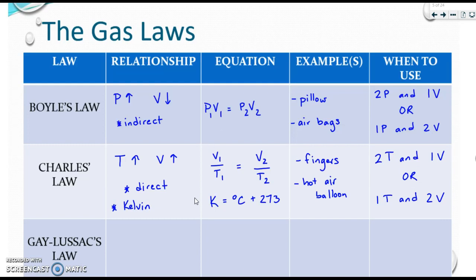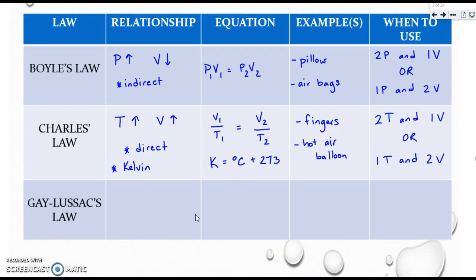The next law is the Gay-Lussac law. It is a pressure temperature relationship. As temperature goes up, pressure goes up, and vice versa. So this is again a direct relationship. And again, we're going to need the Kelvin temperature scale. The equation looks just like Charles's law, but with pressure instead. So it's P1 over T1 equals P2 over T2. And again, the Kelvin scale is needed for temperature. The example I have here is tire pressure, which we discussed on a previous slide. You're going to use this law if you have two pressures and one temperature, or if you have one pressure and two temperatures.